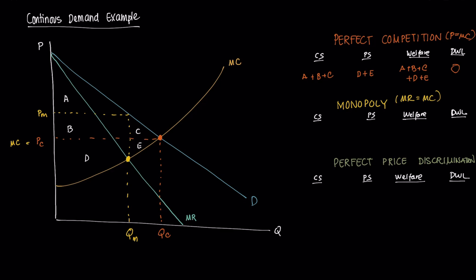Under a monopoly, the consumer surplus is much lower — just area A — because the monopolist charges the higher price PM, extracting some surplus. The producer surplus is B plus D. Total welfare is A plus B plus D, and there is deadweight loss equal to C plus E, which is the triangle representing lost welfare due to the monopolist's pricing behavior.